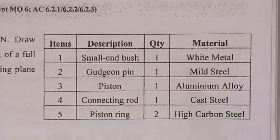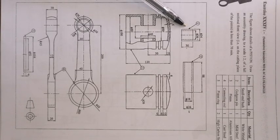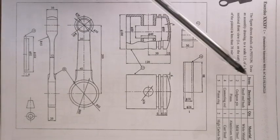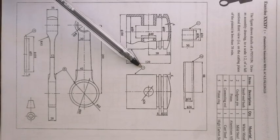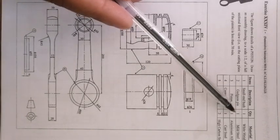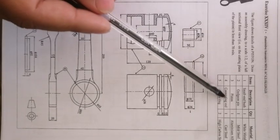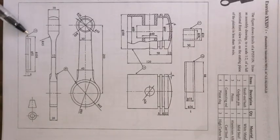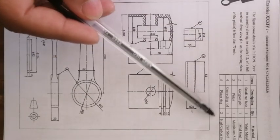Let's look at the components. The first one is the small end bush, which is given by the parts list. The second one is the gudgeon pin, number two. The third one is the piston, number three — there's one of it. The fourth component is the connecting rod, there's one of it, made out of cast iron. The fifth component is the piston ring — two of it, made out of high carbon steel. All these need to fit together in an assembly.